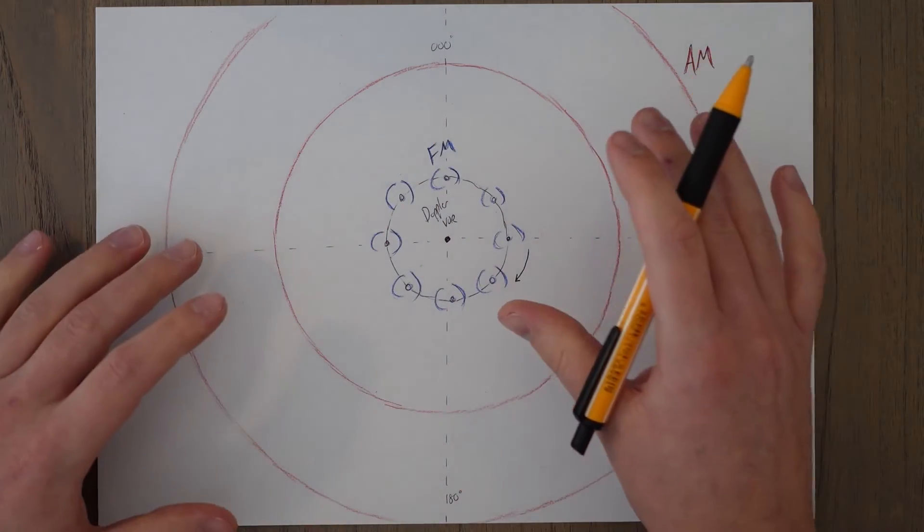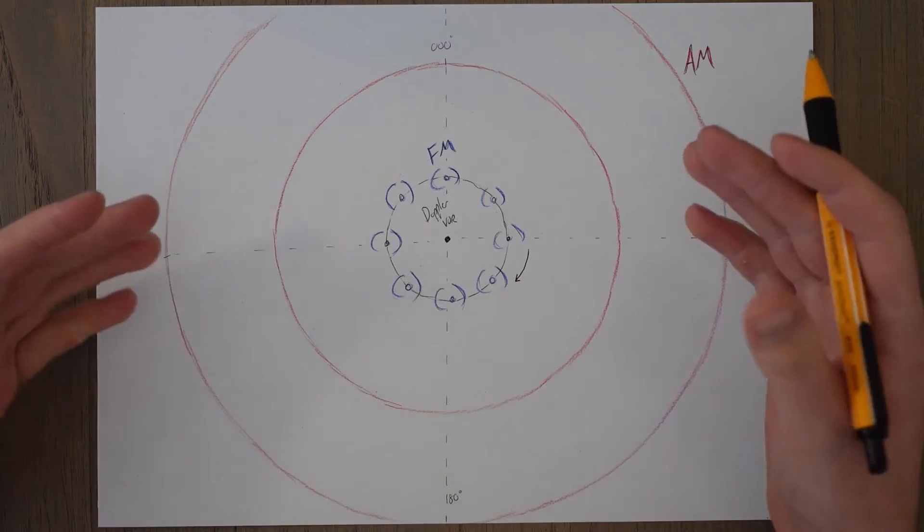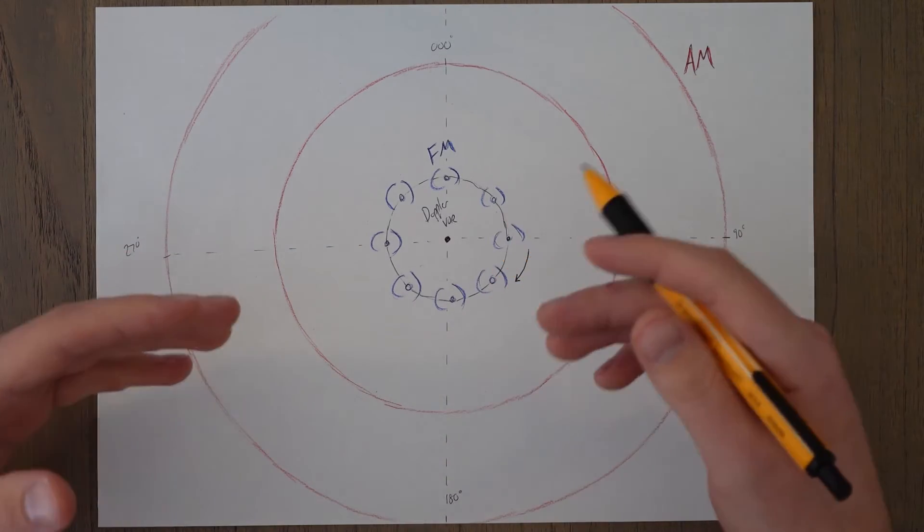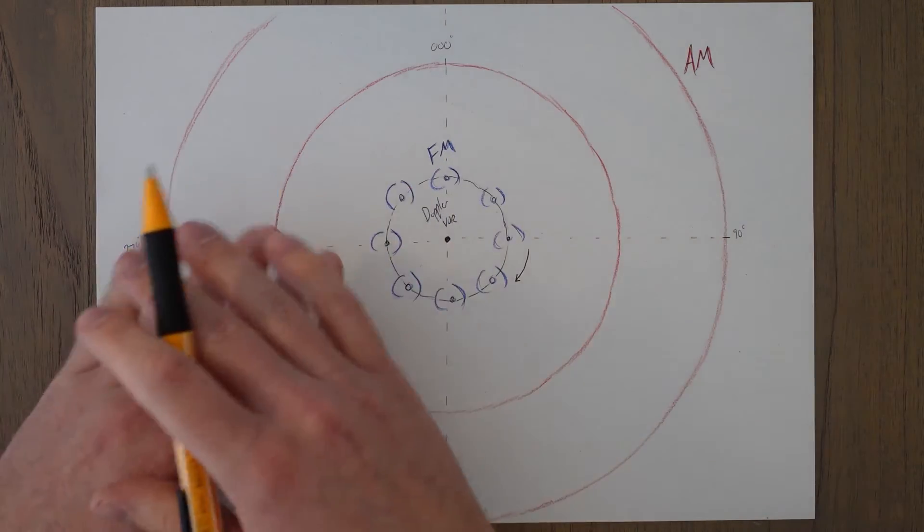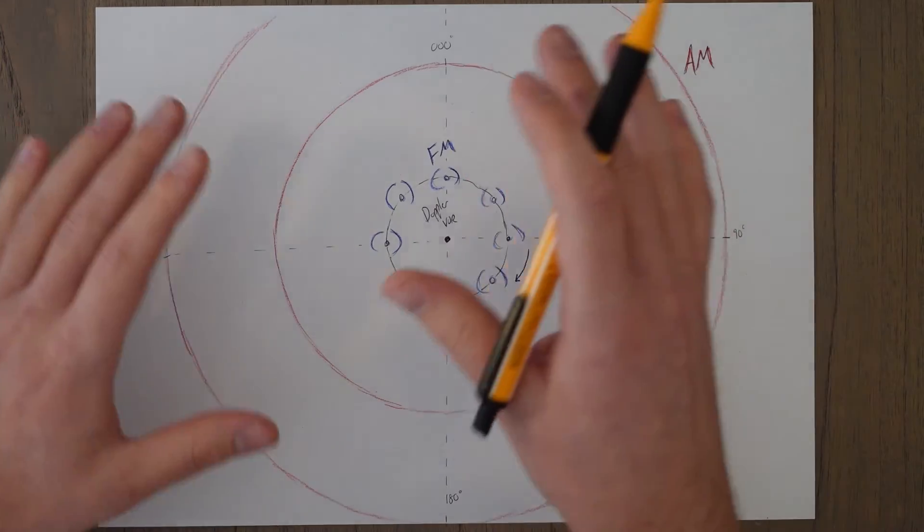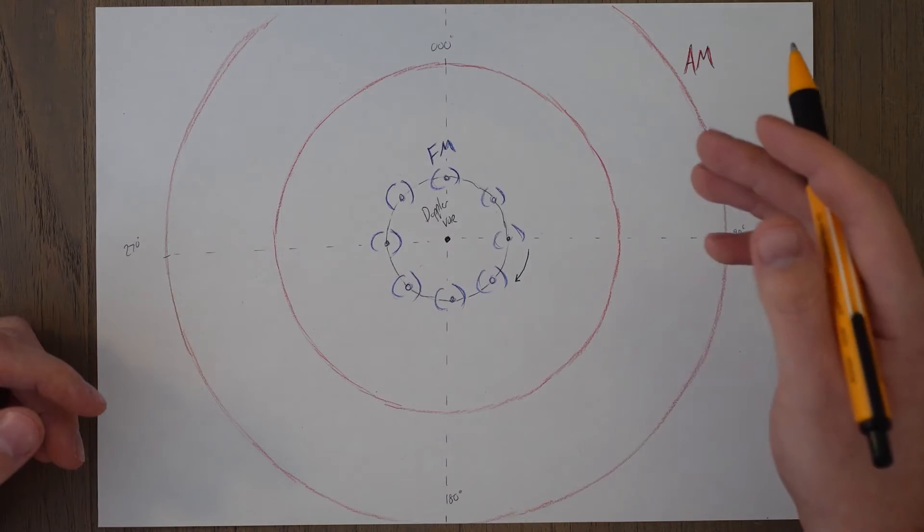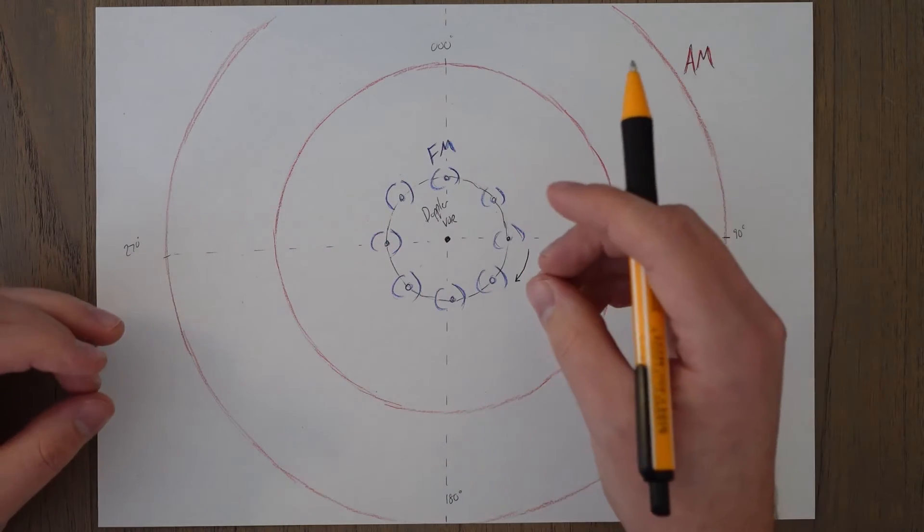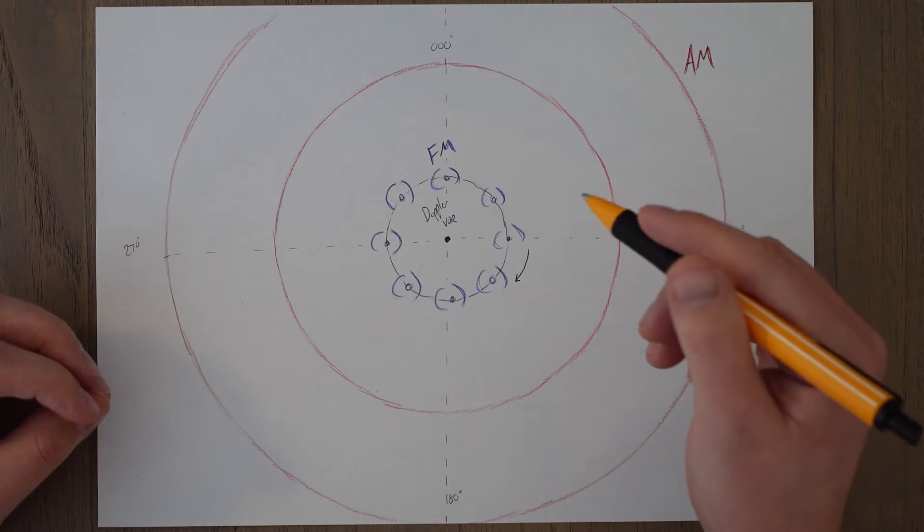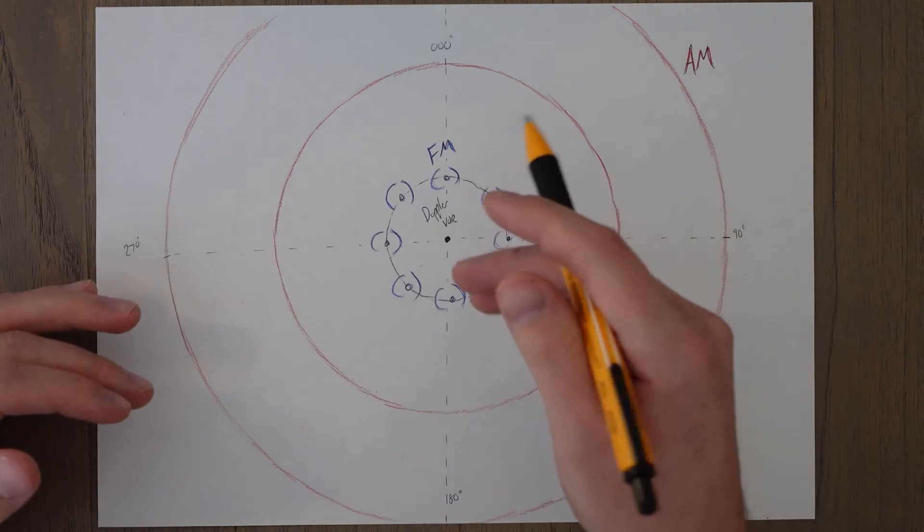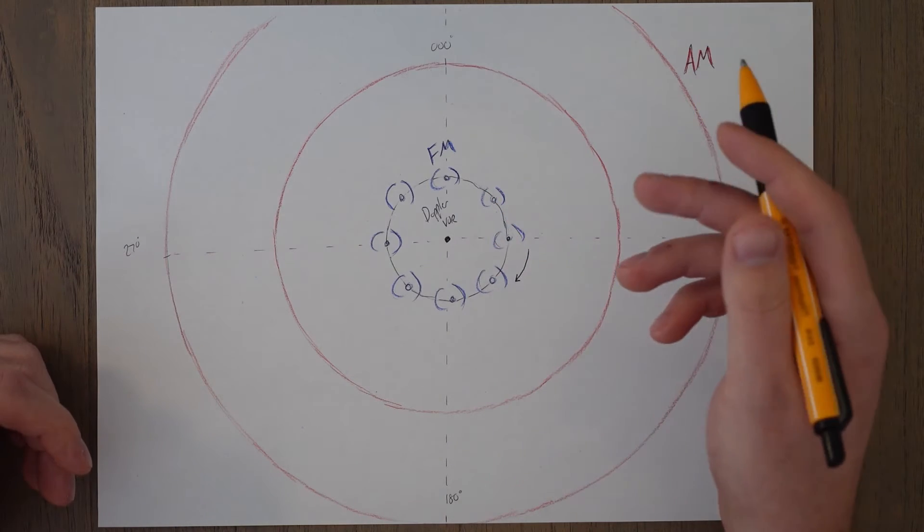As with NDBs, it's important to identify your VORs to ensure our equipment is tuned correctly and we don't just have a control panel that's displaying the correct thing without the antennas changing and tuning in correctly. This is sent out as a separate signal modulated slightly differently at 1020 hertz as a three-letter identifier in Morse code.